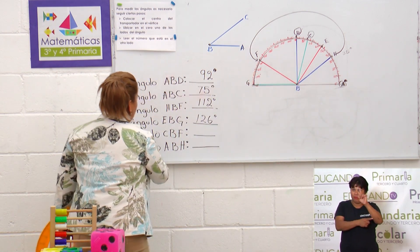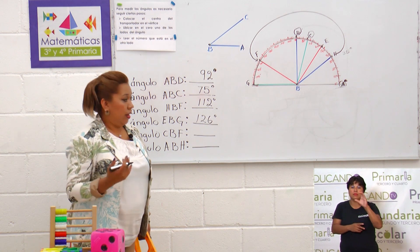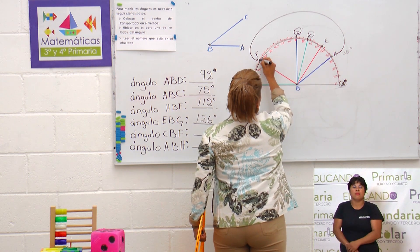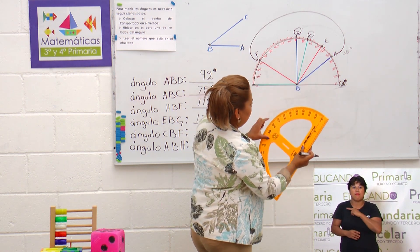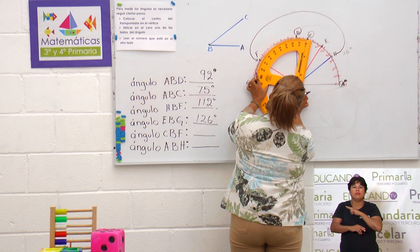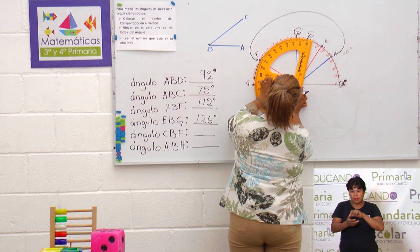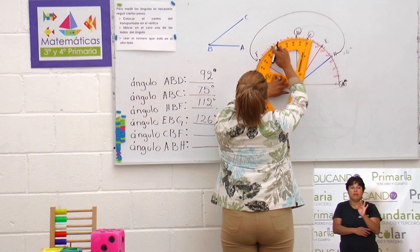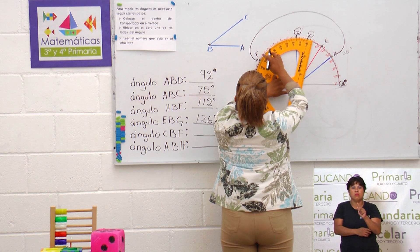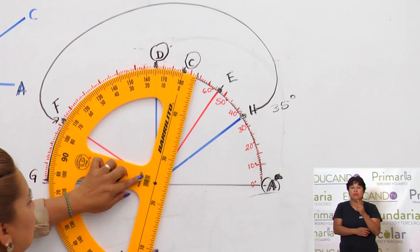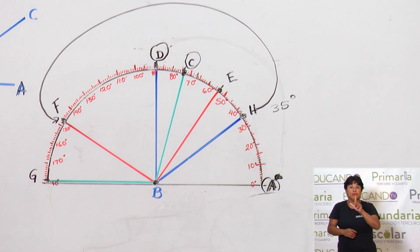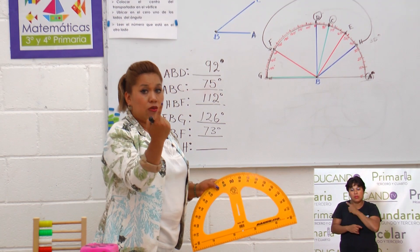Muy bien. Ángulo C, B, F. Vamos a ubicarlo: C, B, F. Y vamos a utilizar otra vez nuestro transportador. Ubicamos el centro, el punto cero, y contamos: 10, 20, 30, 40, 50, 60, 70, 71, 72 y 73 grados. Recuerda que después de que llegas al número entero ya los demás se van contando de uno en uno.